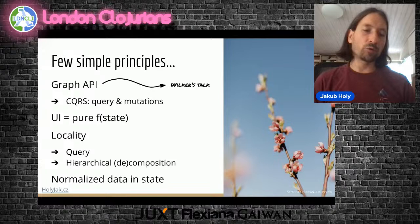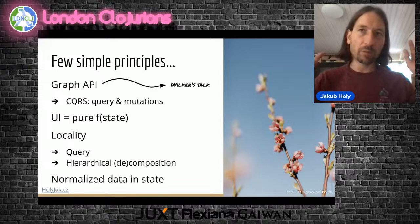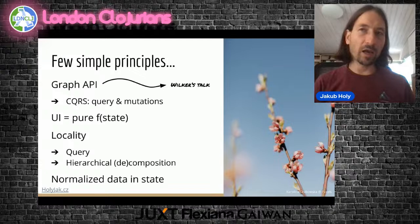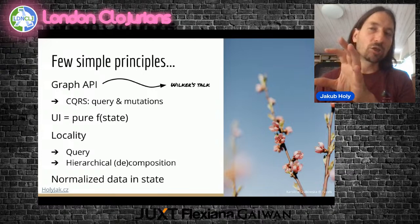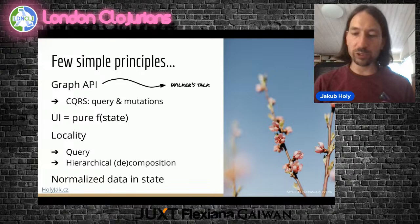The final principle is normalized data and state. The client-side state and cache doesn't store the tree of data we got from the backend, but stores that data normalized in a simple tabular form where each data entity has a table — really a map — and where entities that contain other entities in the original tree have those replaced with references. This makes it much easier to find any piece of data, and also when you change a piece of data, the change will be reflected at all the places that use it. That's a really important thing, and we will see more of it later.